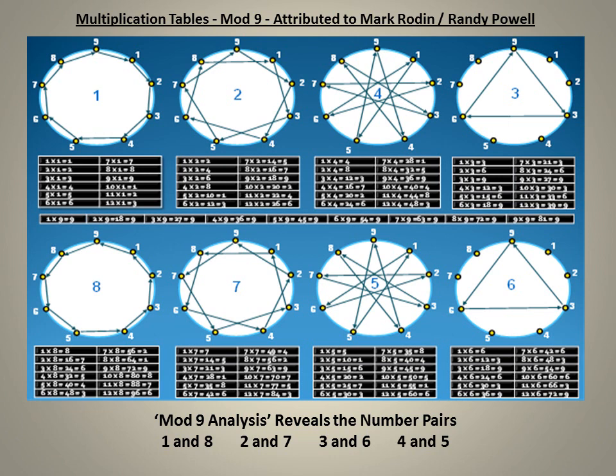We can clearly see that the numbers are paired geometrically in a positive-negative, clockwise-anticlockwise relationship: 1 and 8, 2 and 7, 4 and 5, 3 and 6, 0 and 9. Mod 9 is the only modular base system that displays this symmetry where all numbers are paired off geometrically to form 5 pairs. There are also two distinct circuits: the geometries of 1, 2, 4, 8, 7, and 5 all touch each of the 9 numbers around the circle, whereas 3, 6, and 9 keep to themselves.